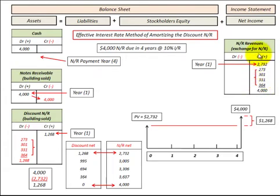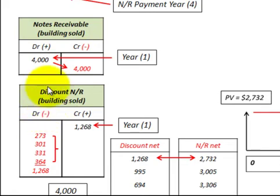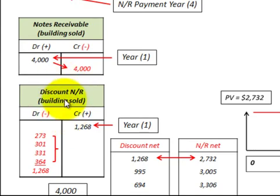Now that we have revenues earned and recorded, we need a balancing entry for our credits to notes receivable for those interest earned. This is where we use the discount to notes receivable. This discount to notes receivable is a contra-account to notes receivable — a debit here is a minus, and a credit here is a minus. So what this discount does is it reduces the notes receivable amount.